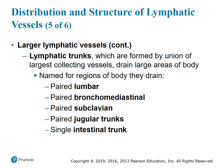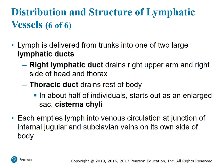Lymphatic trunks are formed by the union of the largest collecting vessels and drain large areas of the body. They are named for the regions they drain: the paired lumbar, paired bronchomediastinal, paired subclavian, paired jugular trunks, and single intestinal trunk. Lymph is delivered from the trunks into one of two large lymphatic ducts: the right lymphatic duct, draining the right upper arm and right side of the head and thorax, and the thoracic duct, draining the rest of the body. In about half of individuals it starts as an enlarged sac called the cisterna chyli. Each empties lymph into venous circulation at the junction of the internal jugular and subclavian veins on its own side of the body.